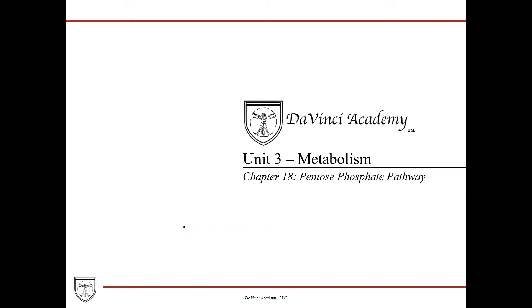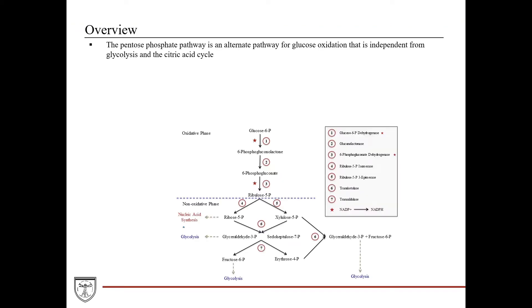For this lecture on unit three, the metabolism unit, we're going to talk about the pentose phosphate pathway. So really an overview — what is the pentose phosphate pathway? It's an alternate pathway for glucose oxidation.